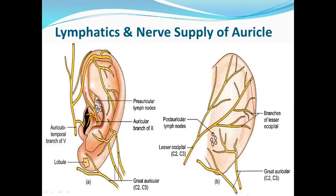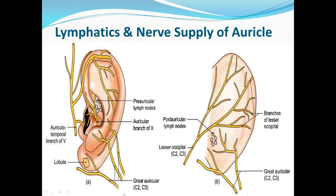Talking about nerve supply: it is divided based on two surfaces — the outer or lateral surface and the inner or medial surface. On the lateral surface, the upper two-thirds is supplied by the auriculo-temporal nerve, a branch of the trigeminal nerve. The lower one-third of the lateral surface is supplied by the greater auricular nerve, root value C2-C3.